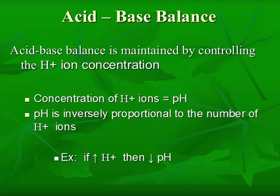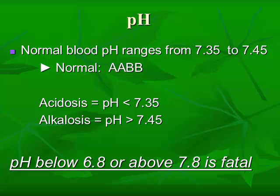A slight increase in hydrogen ions causes proteins, such as hormones and enzymes, to be denatured, changing their configurations and rendering them inactive. When we look a little closer at pH, the normal blood pH ranges from 7.35 to 7.45. Remember, 7.4 is neutral, therefore the body is slightly basic.